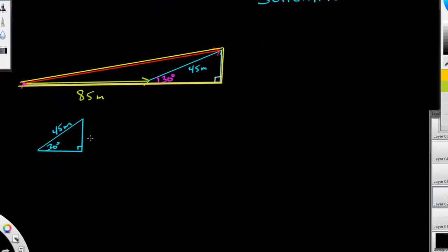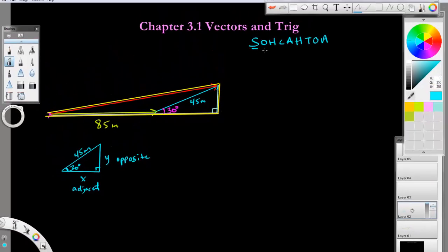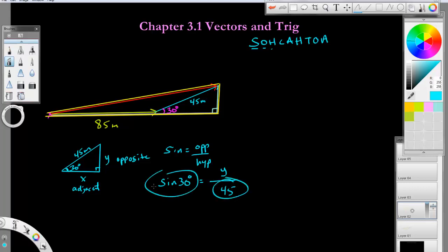I need to find these two side lengths. We'll call it Y since it goes up and down, and X since it goes sideways. From this 30 degree angle, this is the opposite side, and this is the adjacent side. To find this side, sine equals opposite over hypotenuse. So sine of 30 degrees equals Y over 45. To solve this, multiply these together: 45 times sine 30 equals Y.